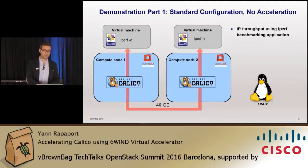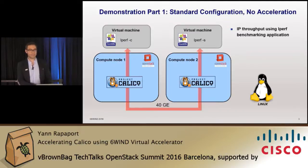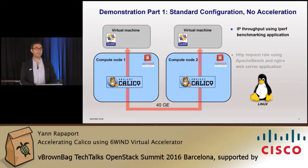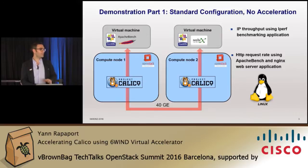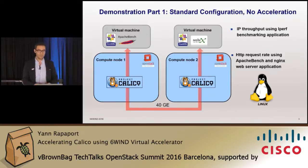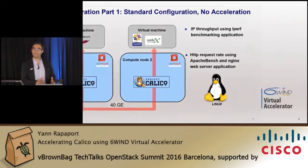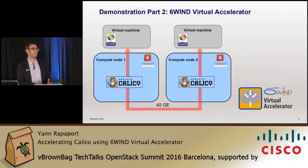The first test will be an IP throughput test using IPERF between one VM and the other. Then we will do a second test evaluating HTTP request rate using an Nginx server and Apache Bench. This will be our first step in the standard Linux environment to establish a reference.